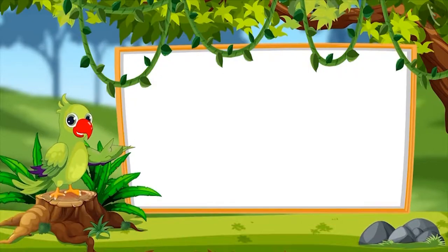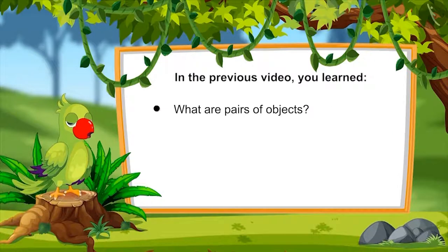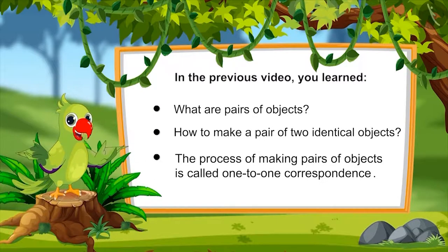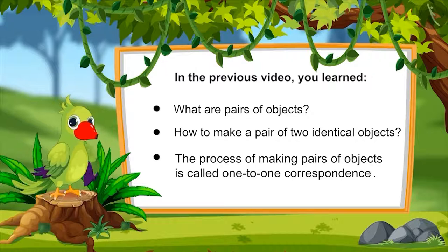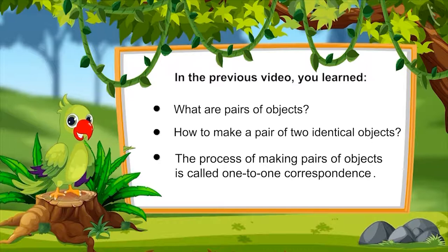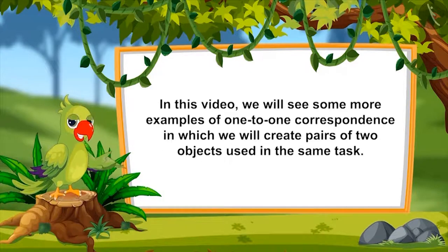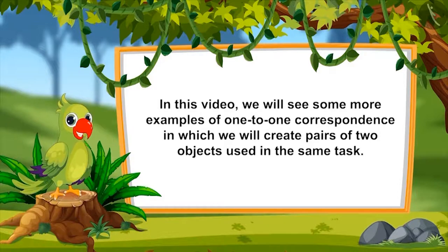Children, in the previous video you have learnt what are pairs of objects and how to make a pair of two identical objects. This process of making pairs of objects is called one-to-one correspondence. In this video we will see some more examples of one-to-one correspondence, in which we will create pairs of two objects used in the same task.